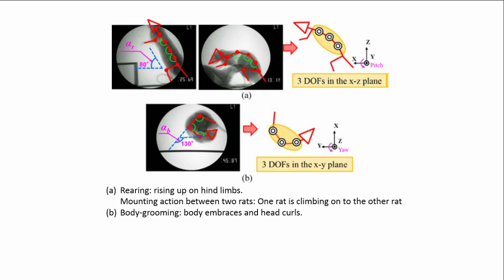They assume that three movable joints are required in the dorsal spine to ensure realistic imitation of rearing, mounting, rotating, and body grooming actions. Three DOFs are configured in both the XZ plane and XY plane.